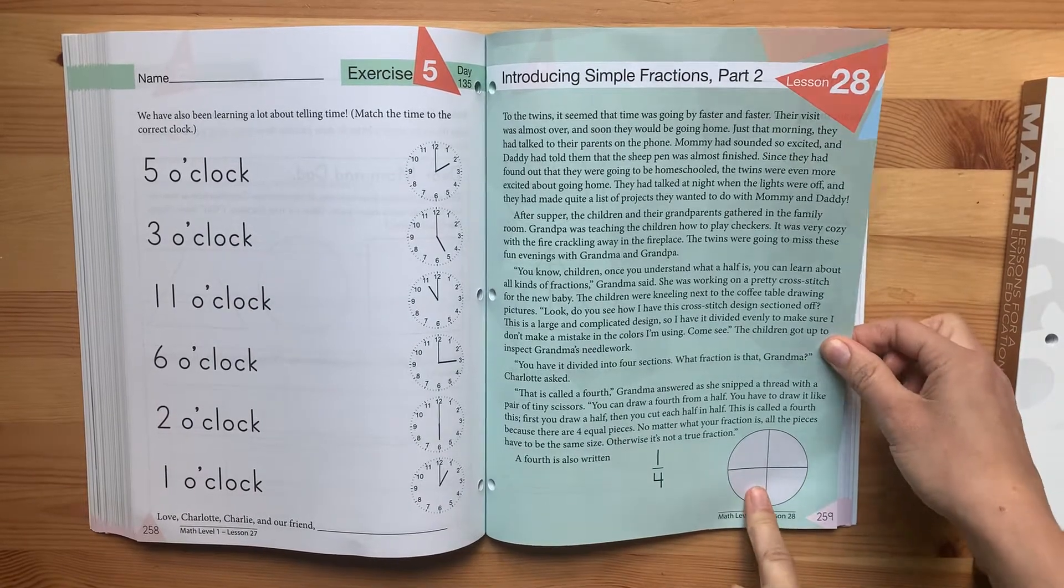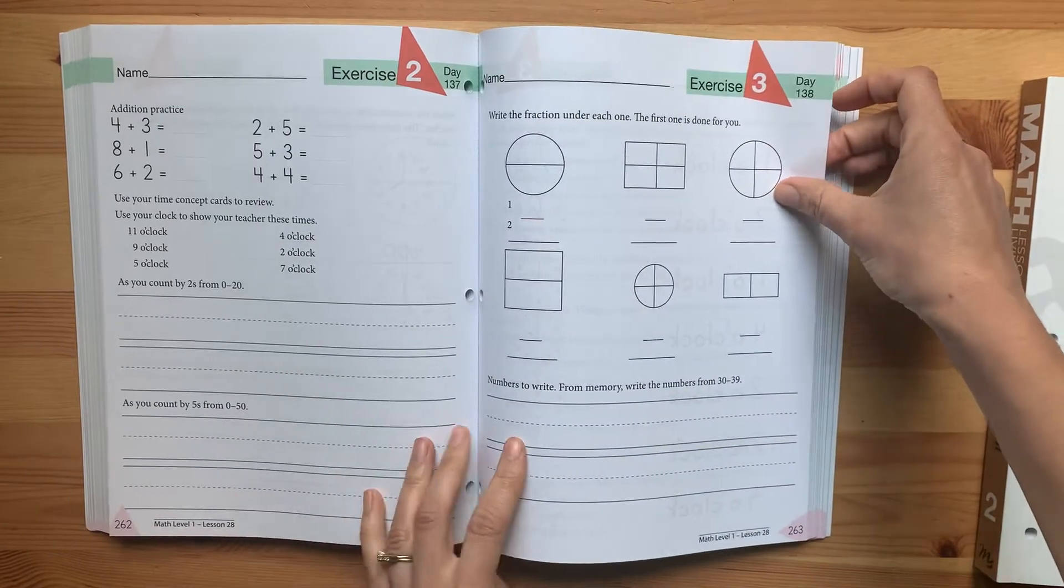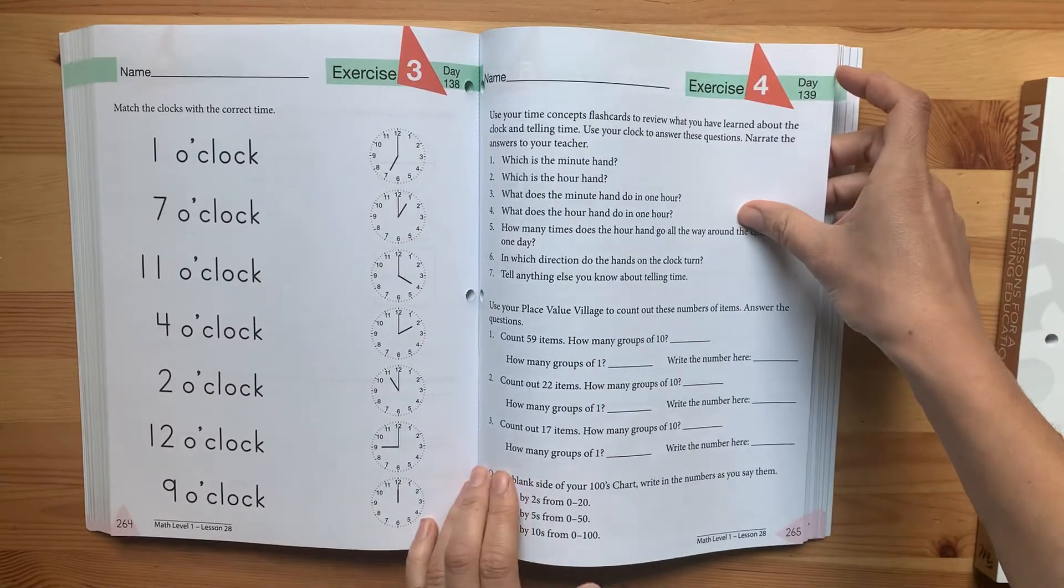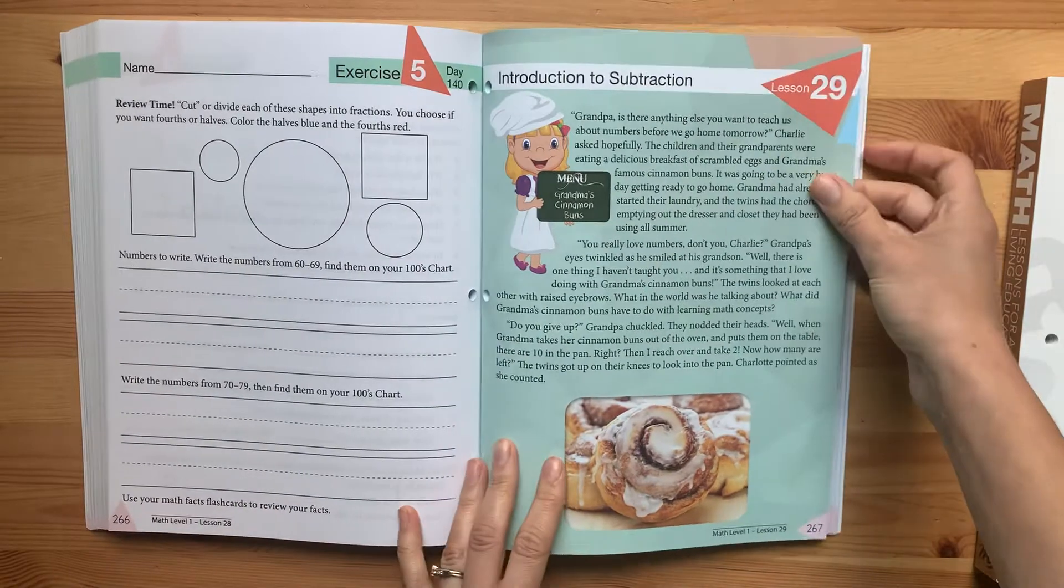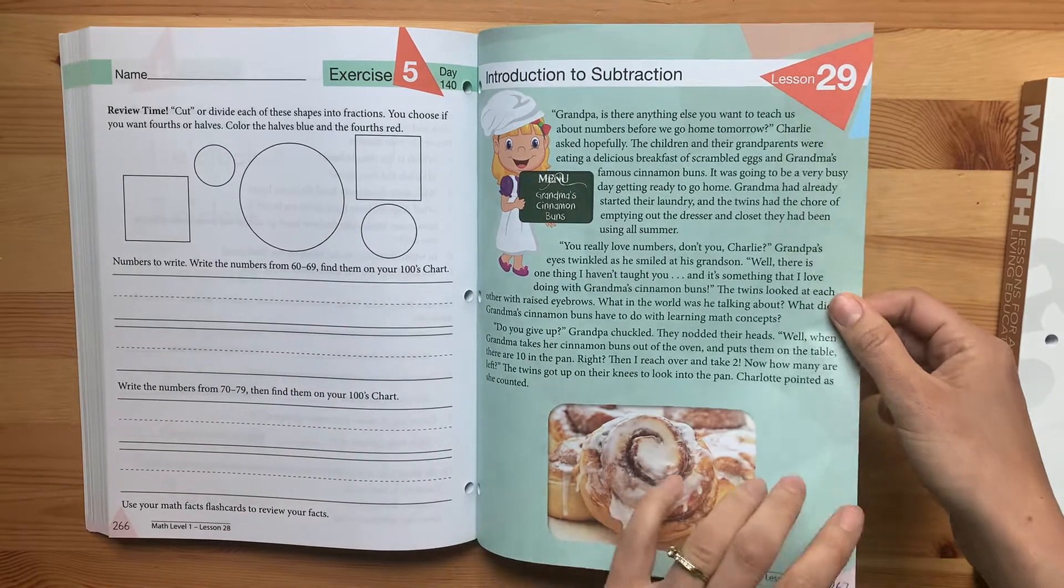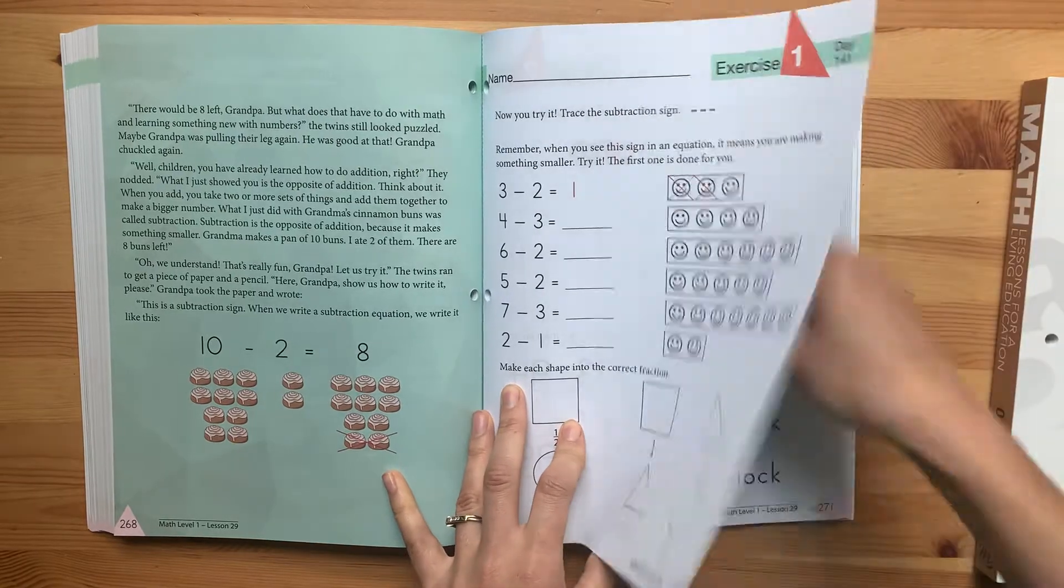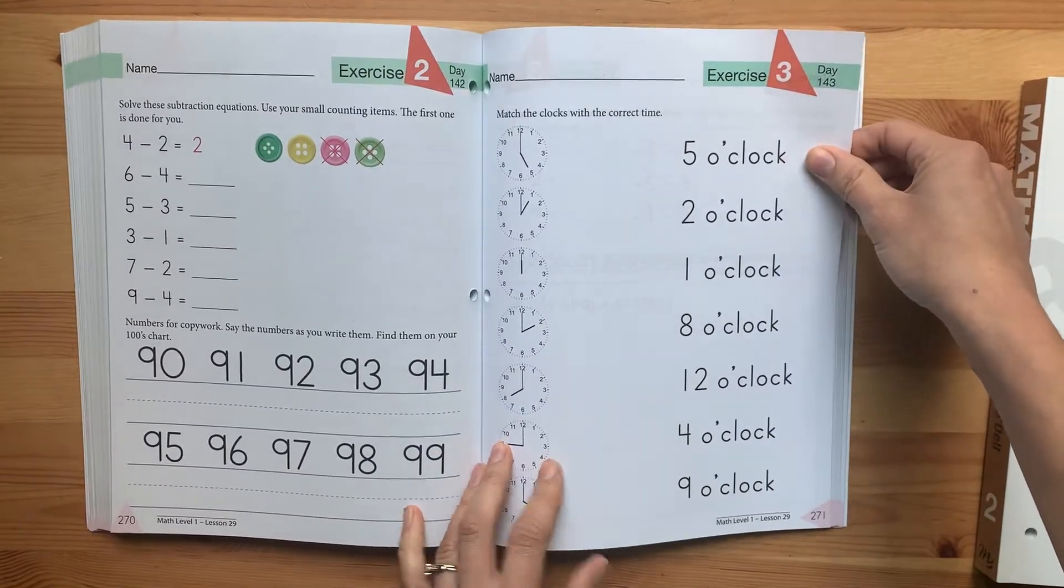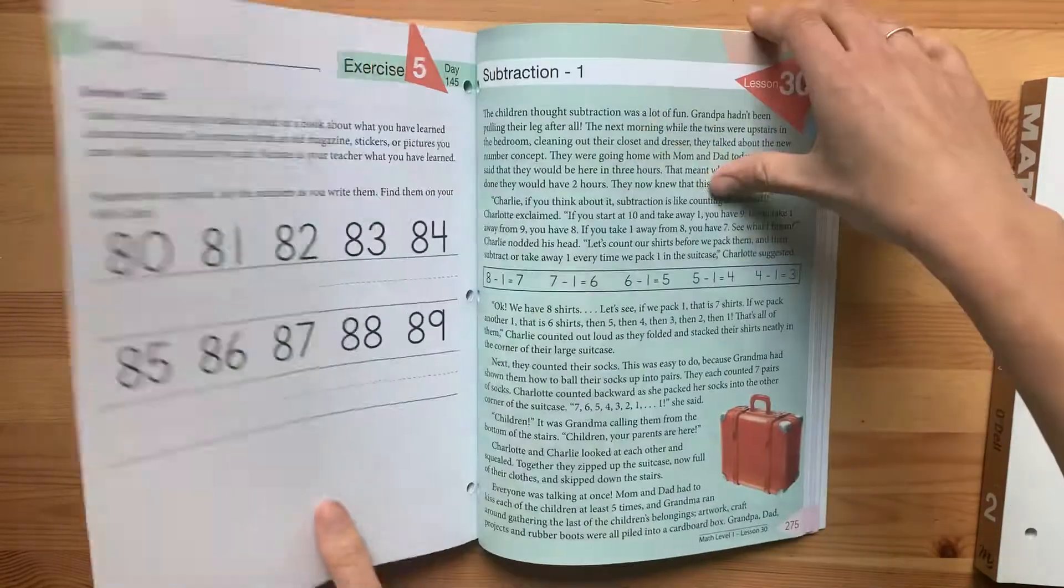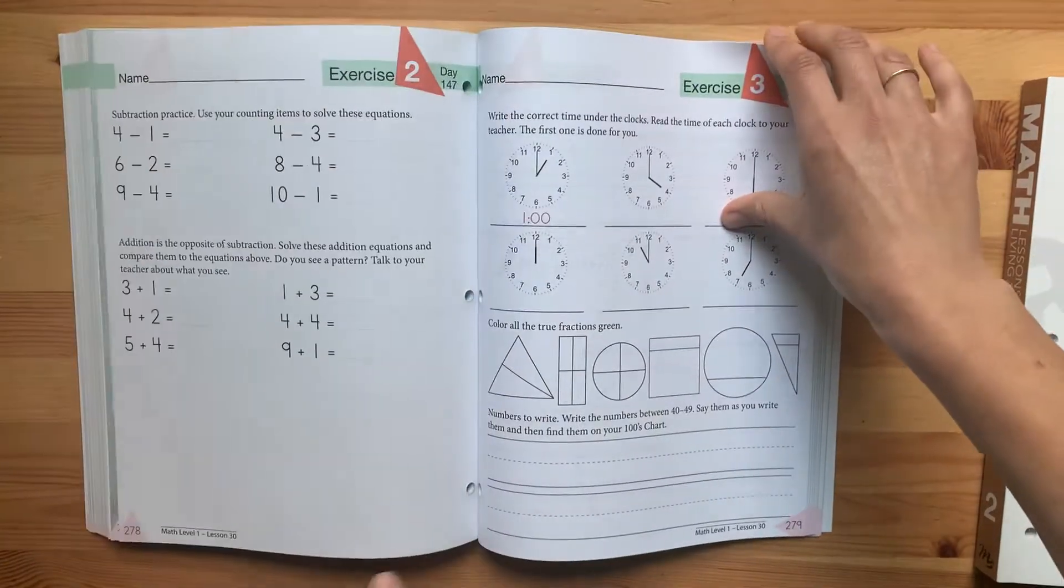More telling time. Now you're getting into simple fractions. Write the fraction under each one. The first one is done for you. Write the numbers. Cut or divide each of these shapes into the fractions. Baking. Subtracting. More time. I'll start to see the pattern there.